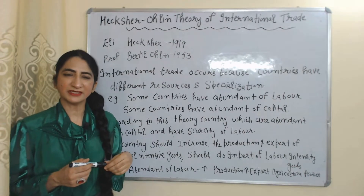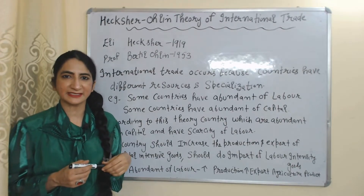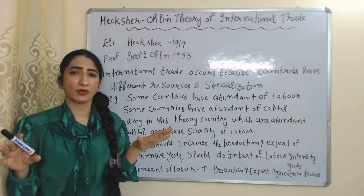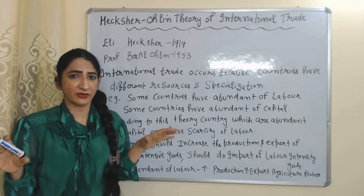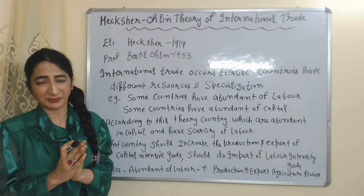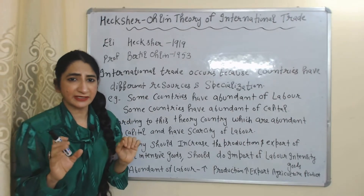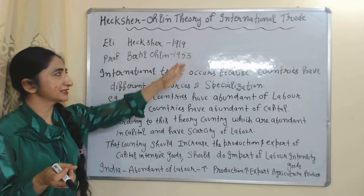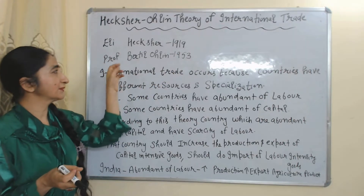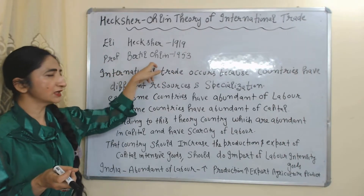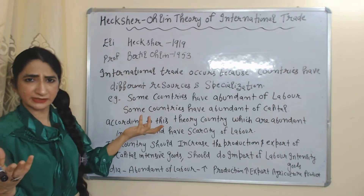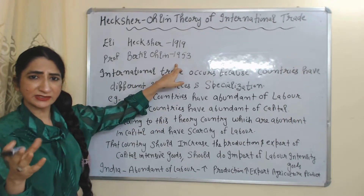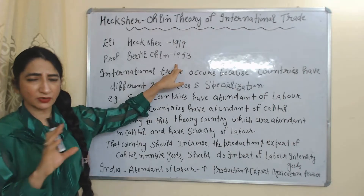Hello everyone, my name is Mini Sati. I hope you all are staying healthy. Today we are going to talk about the Heckscher-Ohlin theory of international trade. This theory was given by Professor Heckscher in 1919, and later Professor Bertel Ohlin improved this theory in 1953. That's why this theory is known as the Heckscher-Ohlin theory of international trade.